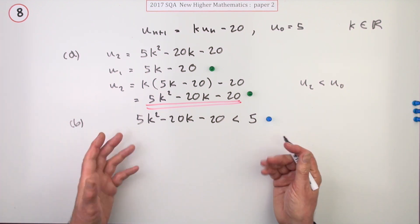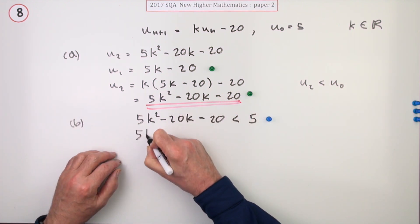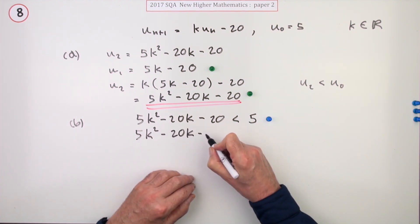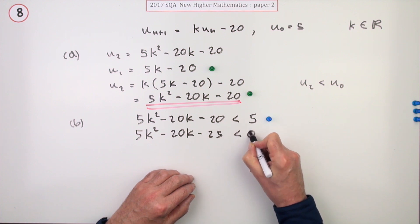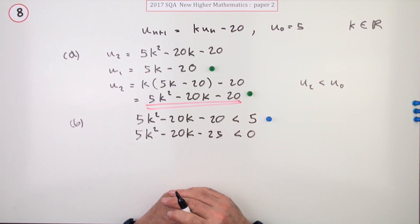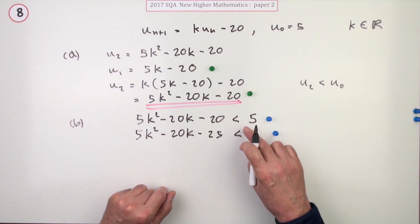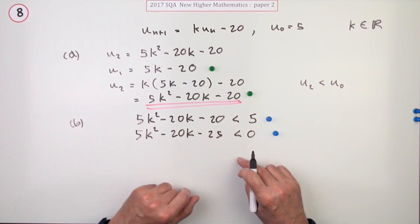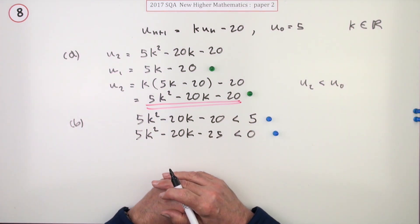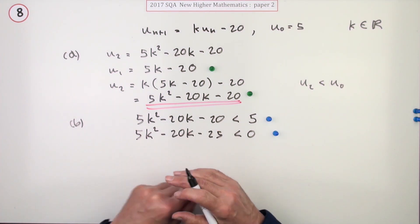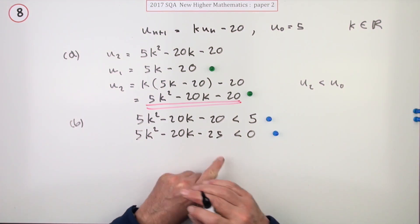Now you have to rearrange that to put everything on one side, so 5k squared minus 20k minus 25 is less than zero. There's your quadratic inequality, that gets a mark. Now you've got to determine the values of k for which this expression is worth less than zero. Basically, you try and find the values that are equal to zero, get the zeros of that expression, then you can consider its graph.